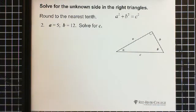Last question. Again, solve for the unknown side of the triangle. It's also asking us to round to the nearest tenth. We're told that side A equals 5. Side B equals 12. And we're solving for C.